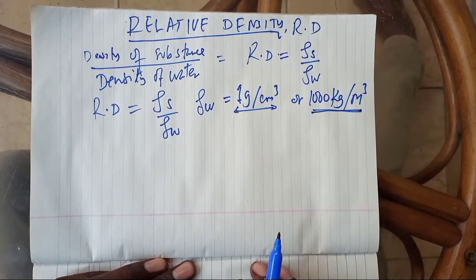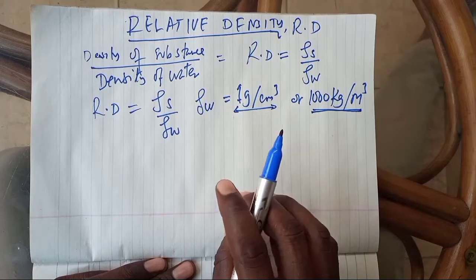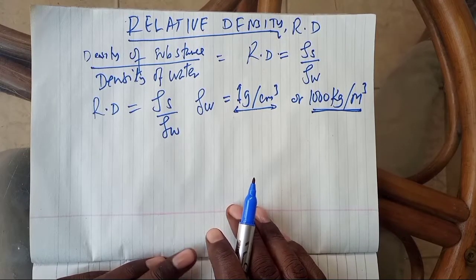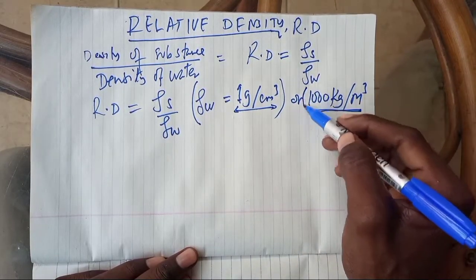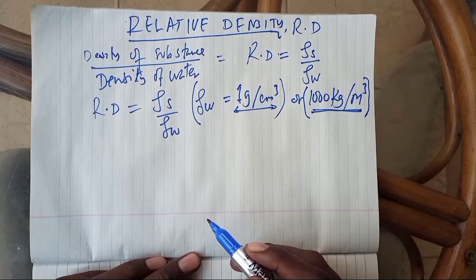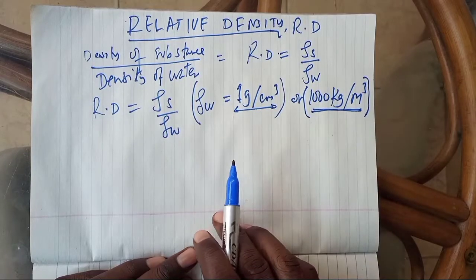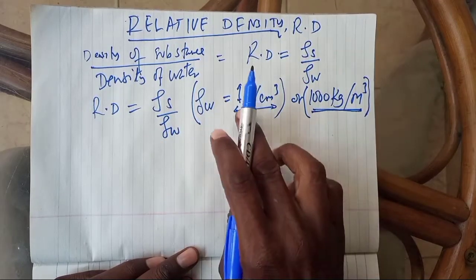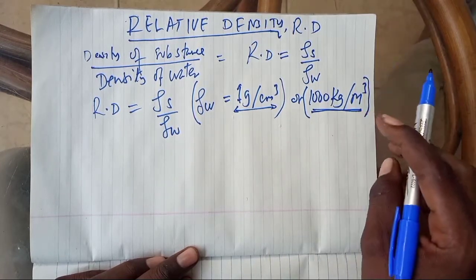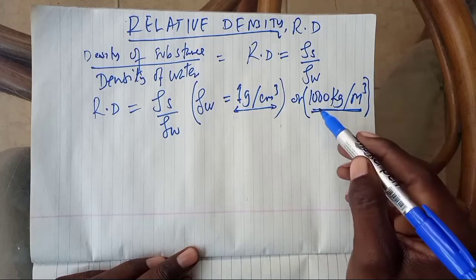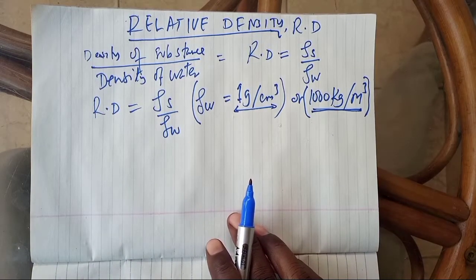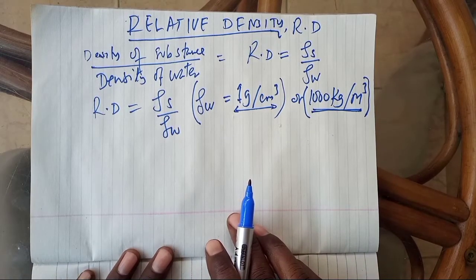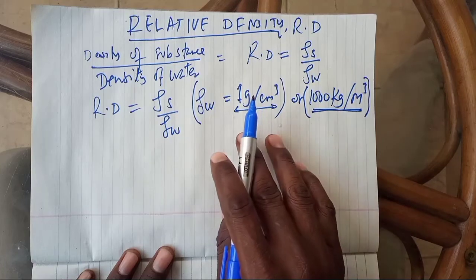Ukitaka kukalkulate relative density, lazima ujue density ya water ambayo ni 1 gram per centimeter cubic, au 1,000 kilogram per meter cubic. Inategemea na swali ambalo umepewa. Kama umepewa in terms of gram, lazima utumie gram per centimeter cubic. Lakini kama umepewa kilogram per meter cubic, lazima density ya water utumie kilogram per meter cubic. That is why we say relative density is the number of times a substance is denser than water.